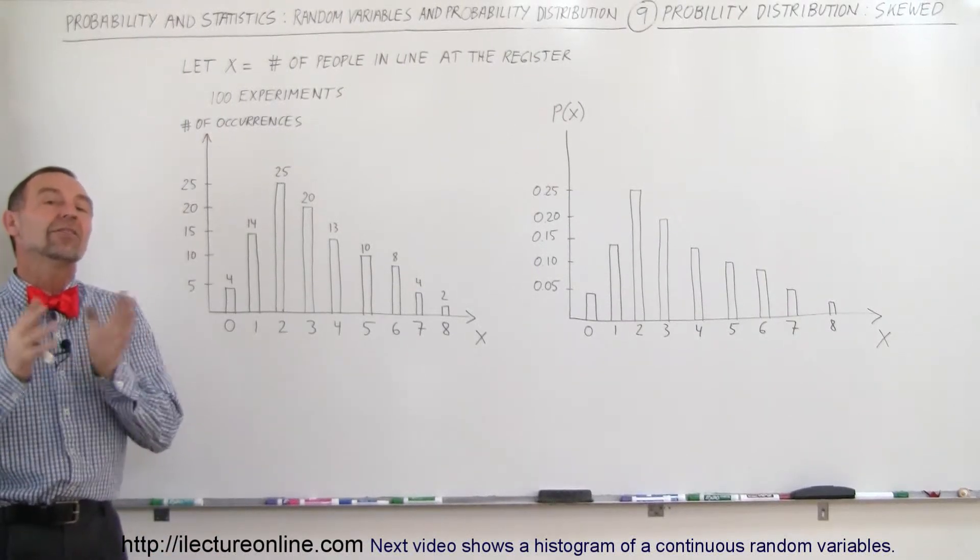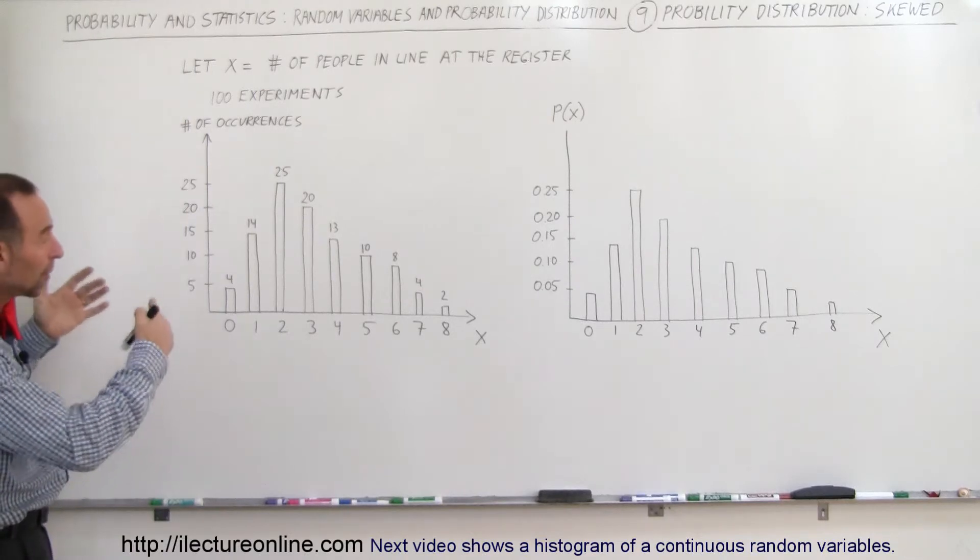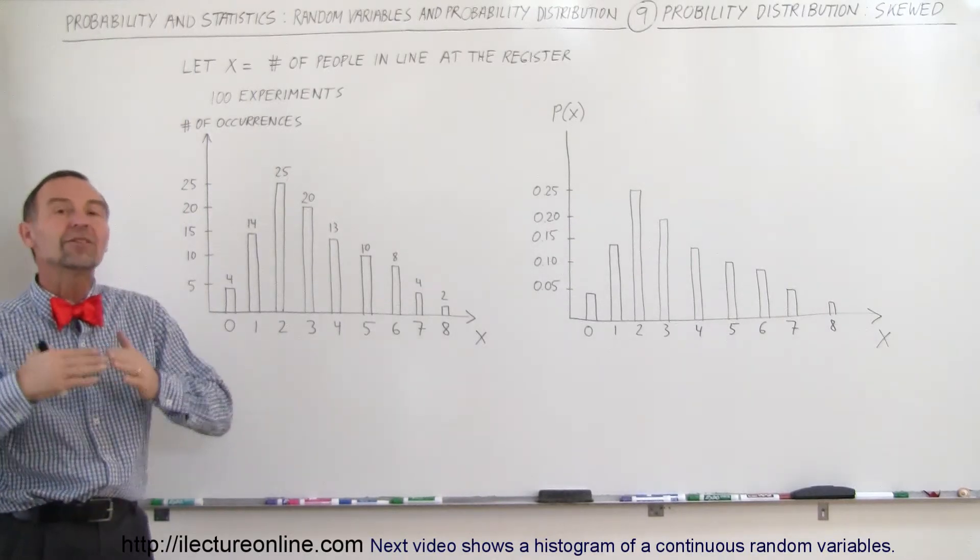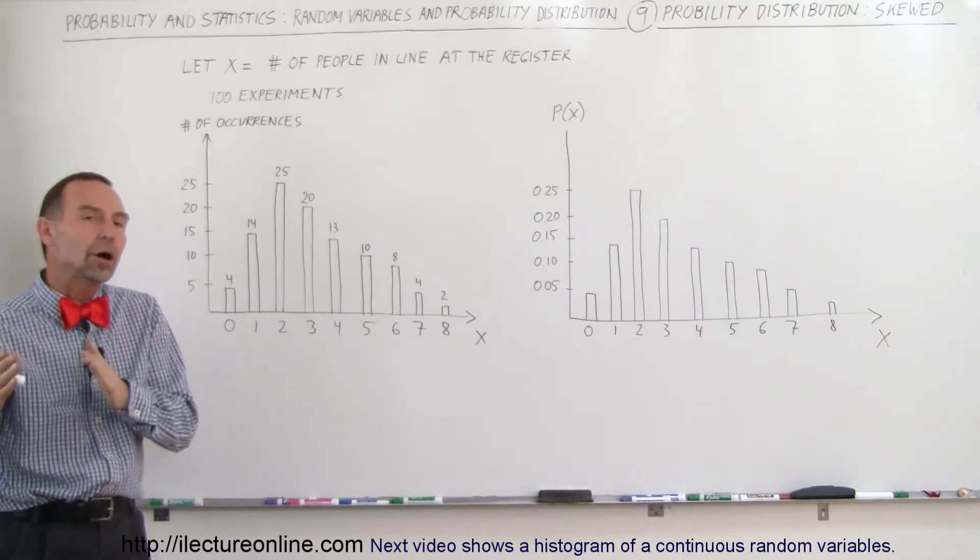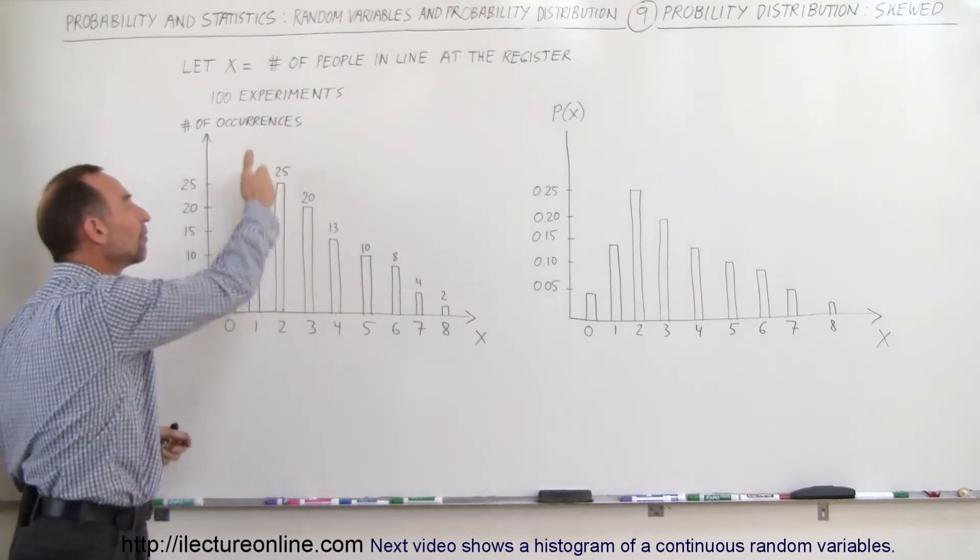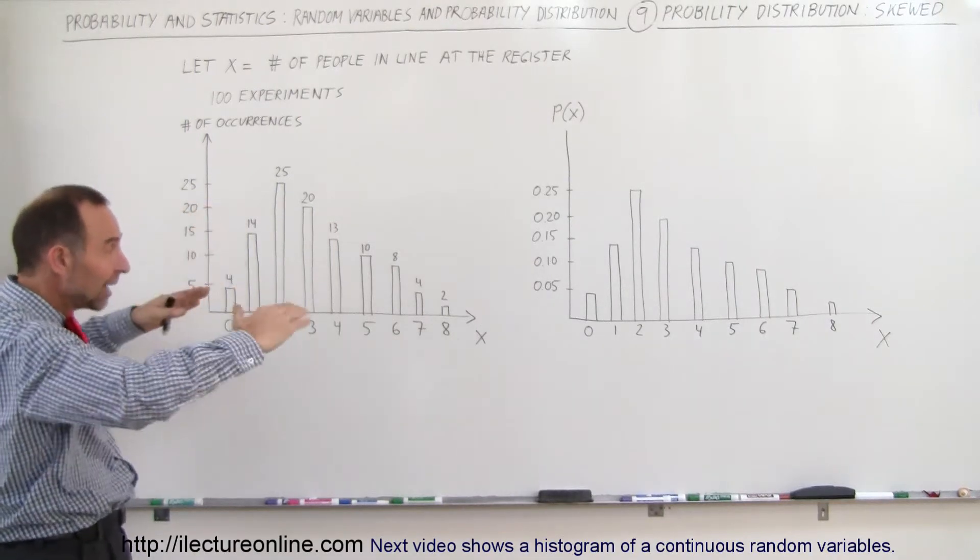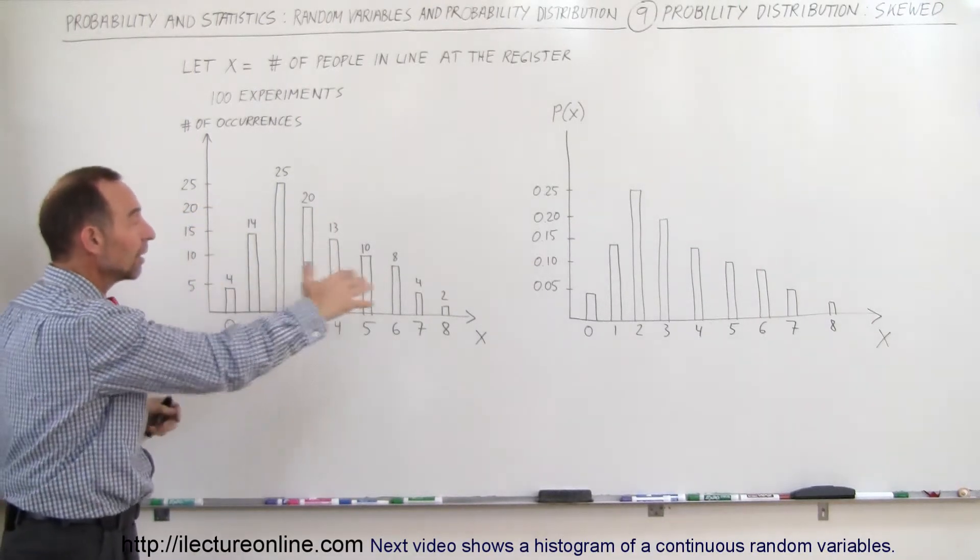Welcome to ElectronLine, and in this example we're going to show you that distribution functions, or what we call probability distributions, don't need to be symmetrical. They can be what we call skewed, which means that the point where the greatest number of occurrences are doesn't have to be right in the center. We don't have to have a nice, even distribution. It can be very different.